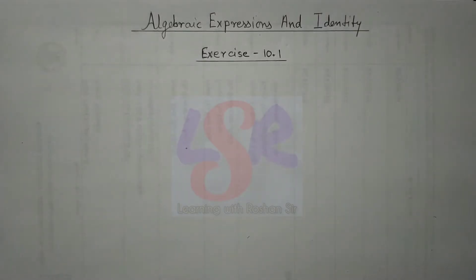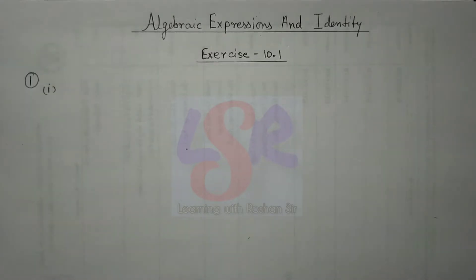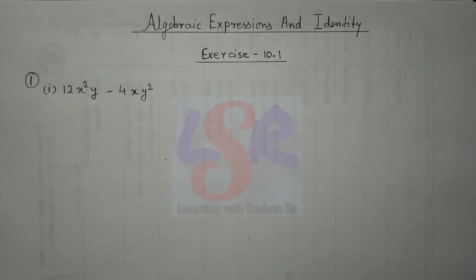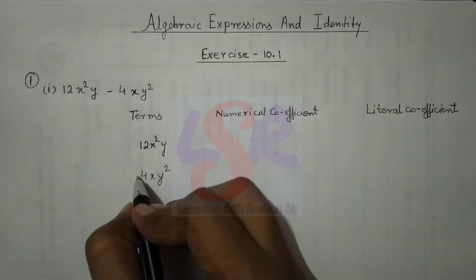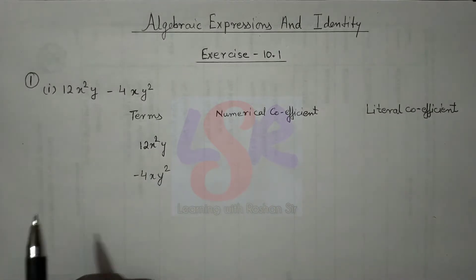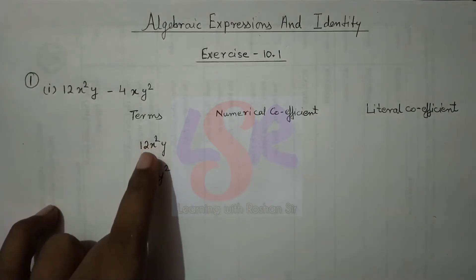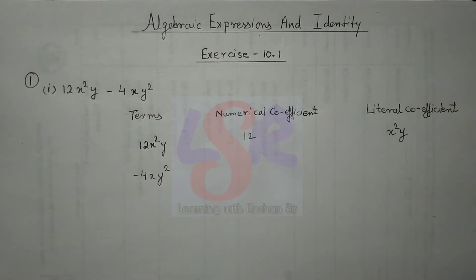We start with Exercise 10.1 of the chapter Algebraic Expressions and Identities. The first question asks us to identify the terms, their numerical as well as literal coefficients in each expression. The first part is 12x²y minus 4xy². We have two terms: 12x²y, where the numerical coefficient is 12 and the literal coefficient is x²y.